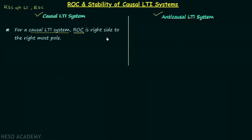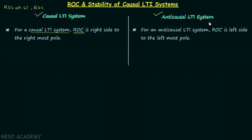Now we move on to the anticausal LTI system. For an anticausal LTI system, the region of convergence is to the left side of the leftmost pole, and this property matches the property of left-sided signals — because for left-sided signals, the Laplace transform will have a region of convergence existing on the left side of the leftmost pole.